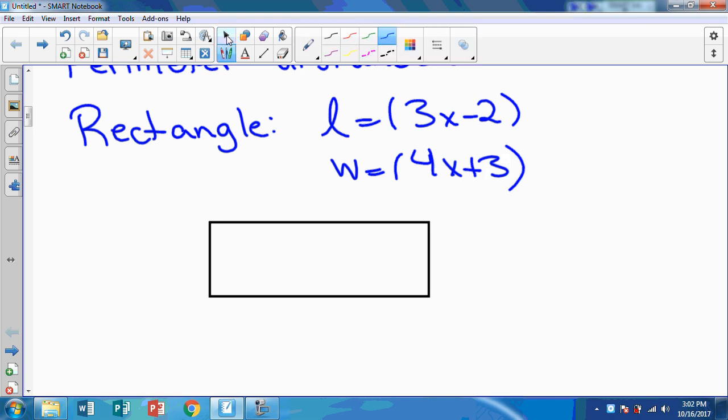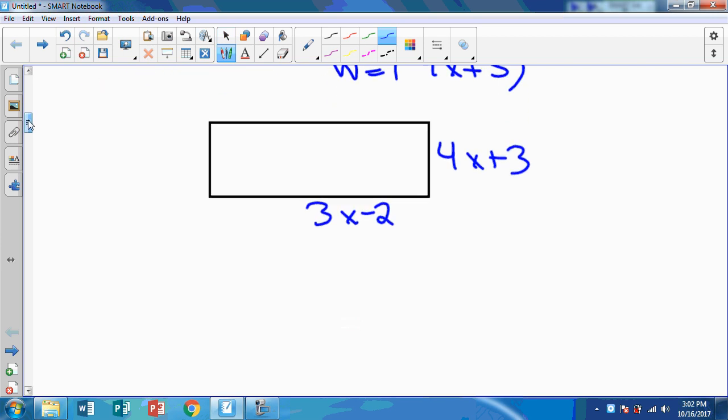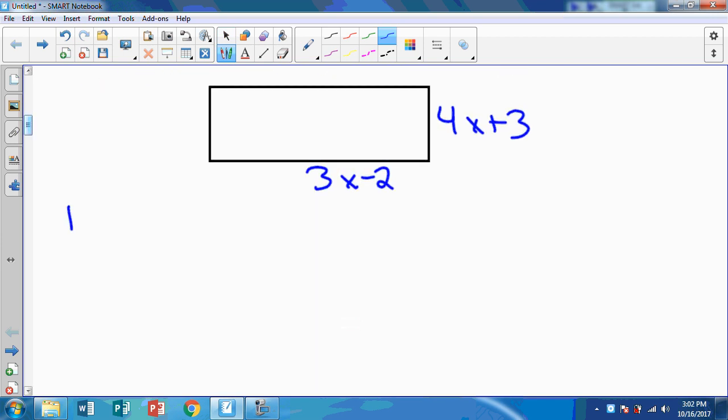And I'm going to label the length as 3x minus 2, and I'm going to label the width as 4x plus 3. Now if you wanted to, you could label your other sides also. Now to find the perimeter, I need all the sides. So there's two ways you could do this. There's two ways you could find the perimeter. The first way is you could just add all four sides together. So here's way number one, and here's way number two.